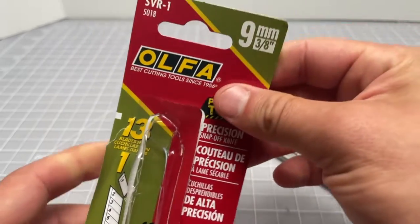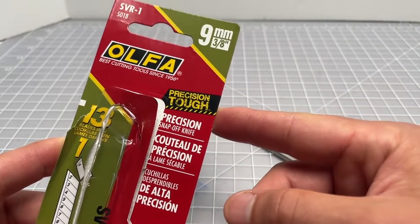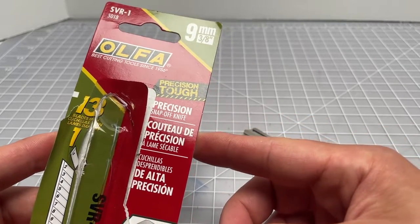Again, the model is SVR1 and uses the three-eighths or nine millimeter blade type. So it's a skinnier blade, so you want to be careful with it.